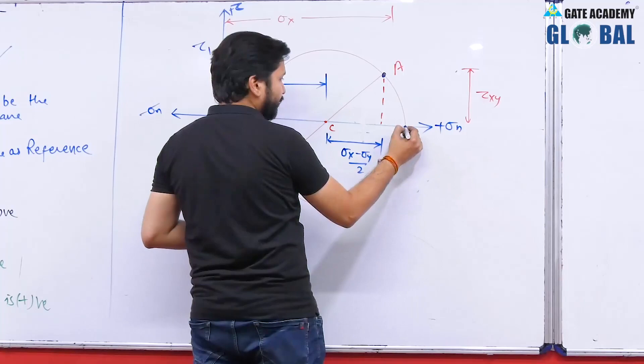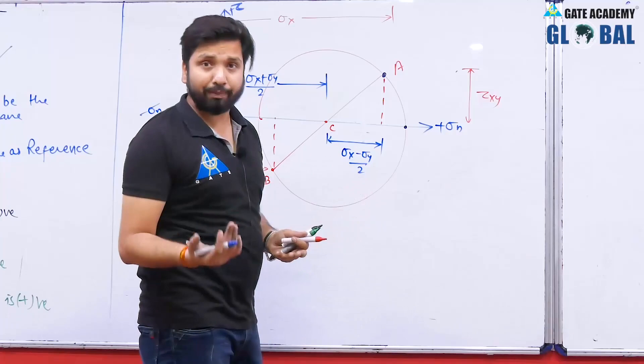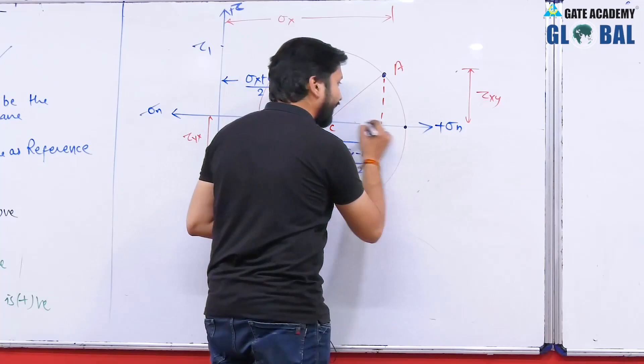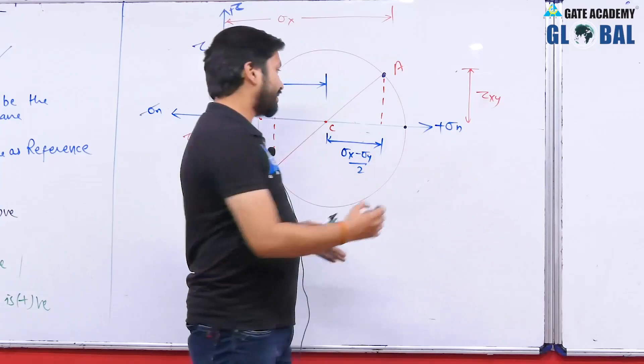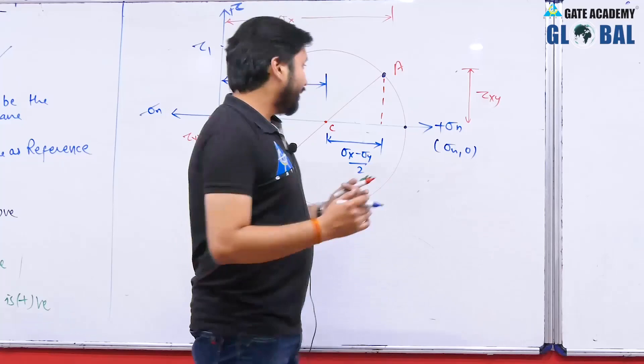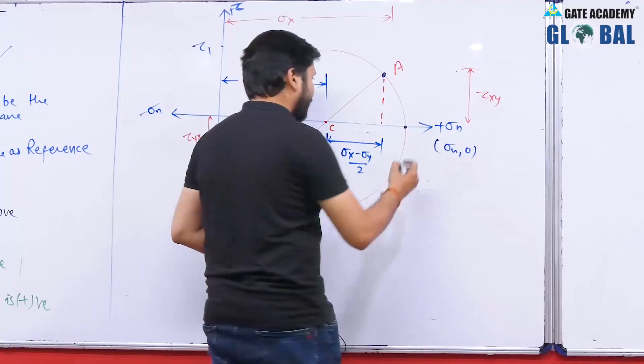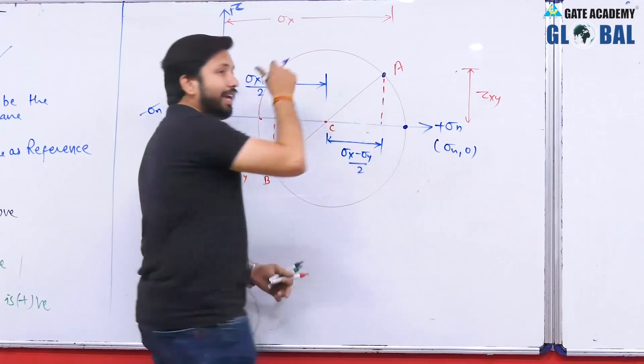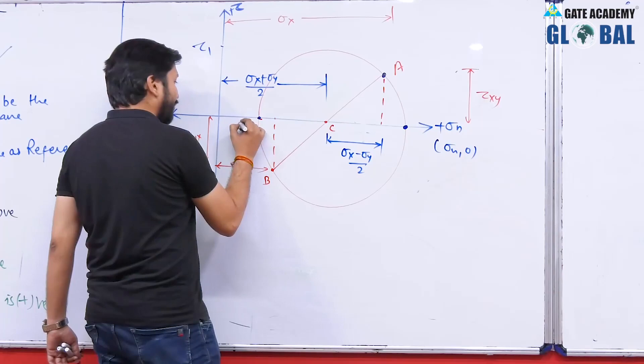The angular position of the principal plane will be measured with respect to plane A, because plane A is our reference plane. A point lying on the sigma n axis has zero shear stress — tau equals 0 — and such a plane is known as a principal plane. The normal stress acting on the principal plane is known as the principal stress.